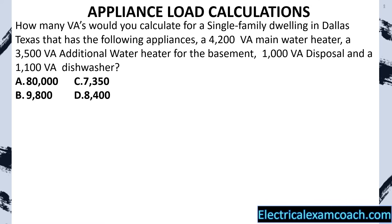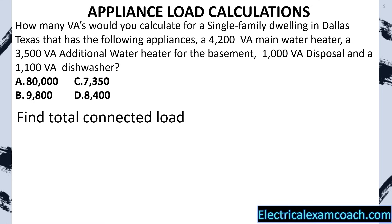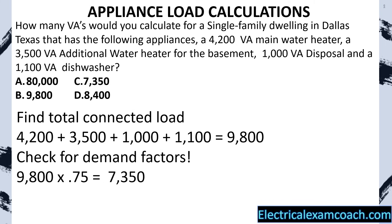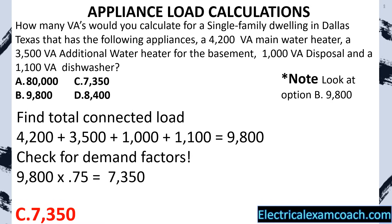How many VAs would you calculate for a single family dwelling in Dallas, Texas that has the following appliances? A 4,200 VA main water heater, a 3,500 VA additional water heater for the basement, a 1,000 VA disposal, and an 1,100 VA dishwasher. First, we find our total connected load — we total it up, and it equals 9,800. Now we check for demand factors. Sure enough, we have four or more fixed appliances, so we can apply the 75% rule. We take 9,800 multiplied by 0.75, which gives us a new reduced load of 7,350 VAs. Option B was 9,800, as if you didn't apply the 75% rule — you've got to be careful. Oftentimes they'll have one answer as if you missed one of the steps. But you've been grinding — you're going to get it. We select C.